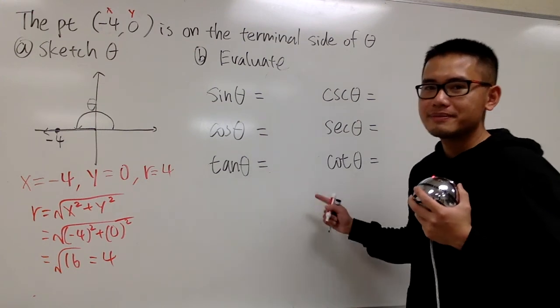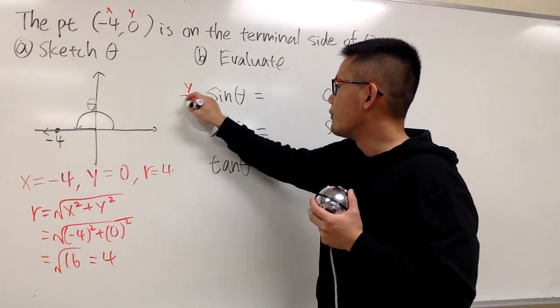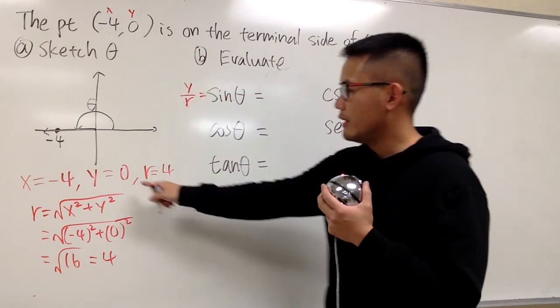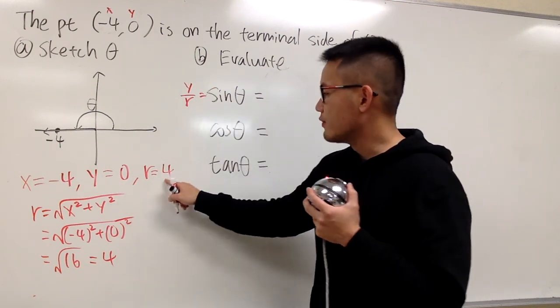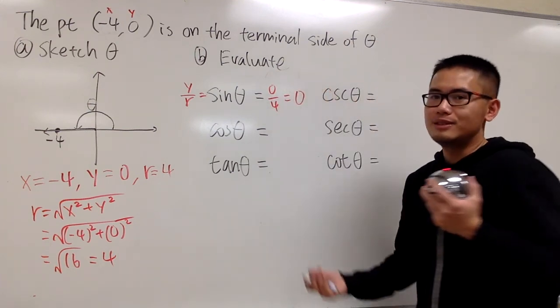All right, next, let's figure this out. Now, for sine θ, we know it is going to be y over r, right? In this case, y is 0, r is 4. So we have 0 over 4, we can simplify this a little bit, it's 0.